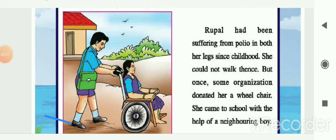In the next picture you can see that Rupal is going to school with the help of a wheelchair and one boy helping her. Rupal had been suffering from polio in both her legs since childhood. Because of this disease she could not walk. Once an organization donated her a wheelchair, and now she comes to school with the help of a neighboring boy who lives nearby. Finally she can go to school.